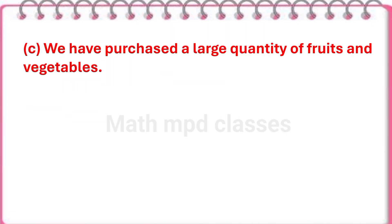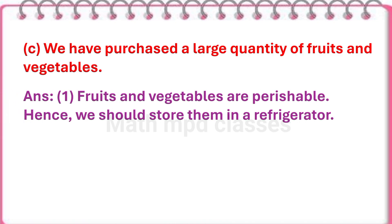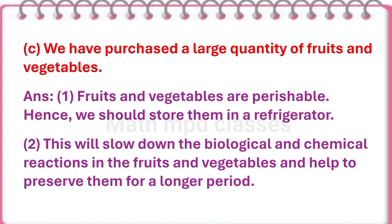Next question: We have purchased a large quantity of fruits and vegetables. Answer: Fruits and vegetables are perishable. Hence, we should store them in a refrigerator. This will slow down the biological and chemical reactions in the fruits and vegetables and help to preserve them for a longer period.